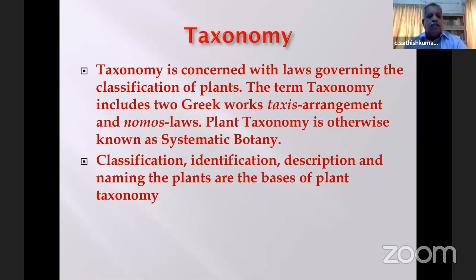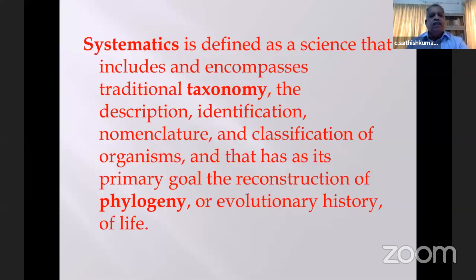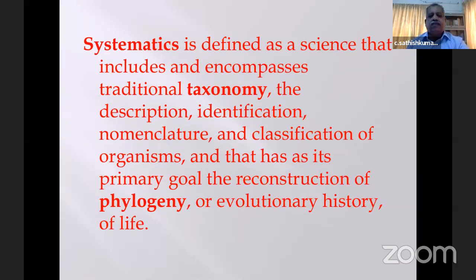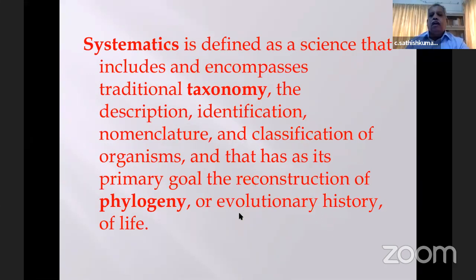Systematics is slightly different. Basically it is taxonomy, but systematics is defined as the science that includes and encompasses traditional taxonomy — that is description, identification, nomenclature, and classification — with its primary goal being the reconstruction of phylogeny or evolutionary history. This is the difference between taxonomy and plant systematics.